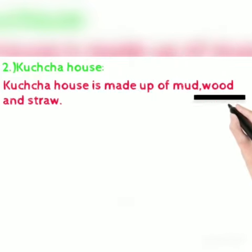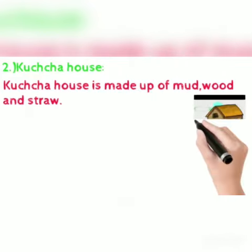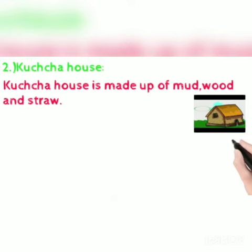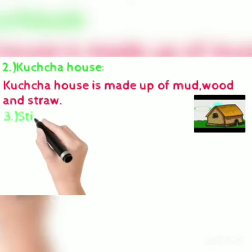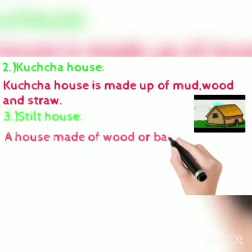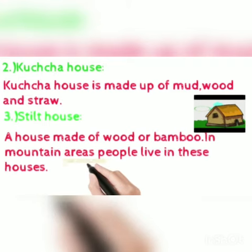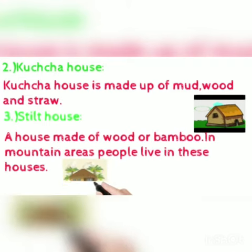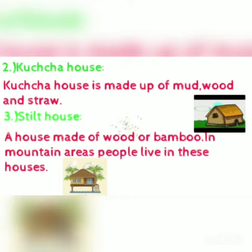The third type is a tilt house. A tilt house is made up of wood or bamboo. In mountain areas, people live in these houses. The fourth type is the igloo.